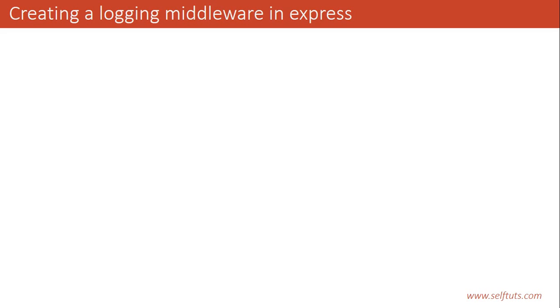In the previous video we also saw an example of logging middleware. If you have multiple routes — a get route, post route, get user, get user by id, post user, delete user — but you want a single logging middleware which will log data such as the IP of the request, the URL of the request, then we can create a logging middleware. So we will create a logging middleware in this video.